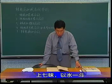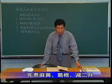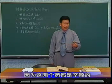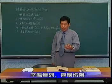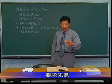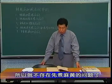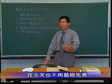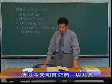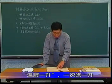煎服法：上七味，以水一斗，先煮麻黄、葛根，减二升，去上沫。为什么要先煮麻黄、葛根？因为这两个药都是辛散的，采的都是新鲜的药，辛温燥烈容易伤阴，所以煮麻黄、煮葛根的时候，要先煮以减少其辛温燥烈的特性。当然这个方子没有麻黄，今天葛根也不用先煮，和其他药一块煮即可。